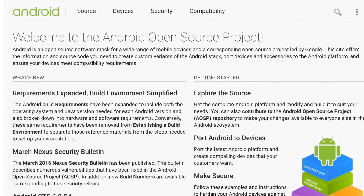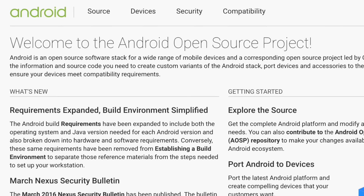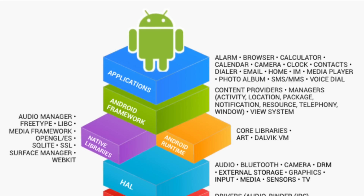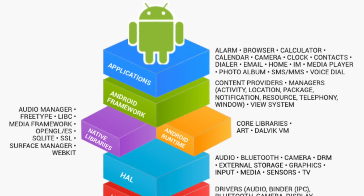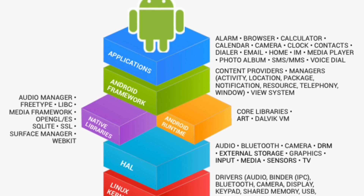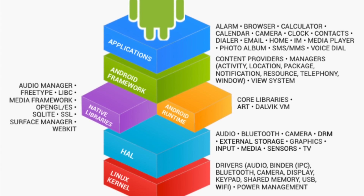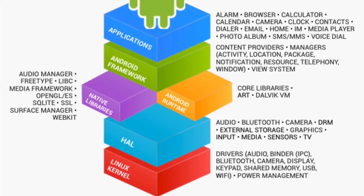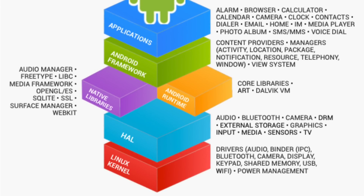But what exactly is a custom ROM? Google releases the source code for Android via the Android Open Source Project, which allows anyone to download the source code for stock Android and modify it to their liking. Many people add features to further optimize the operating system and improve performance. When people talk about flashing ROMs, they are referring to overwriting the old version of Android and replacing it with a third-party alternative, like CyanogenMod.